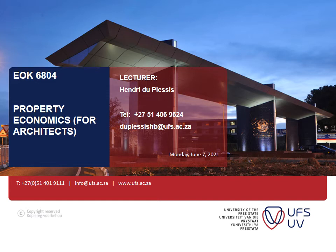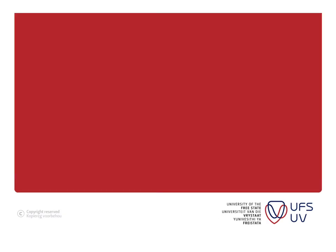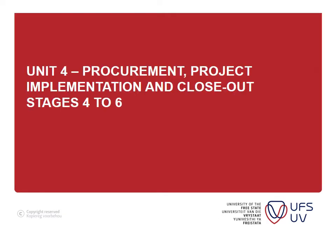Hi, good day everyone. Today we're going to start with Unit 4 and lectures 10.1 until 10.3. We're going to split it into three different lectures — it's basically theory on the procurement process. We're going to start with what bills of quantities is, how it's used during the procurement process, and then how that information is used when doing a tender document and how it's used to evaluate potential contractors.